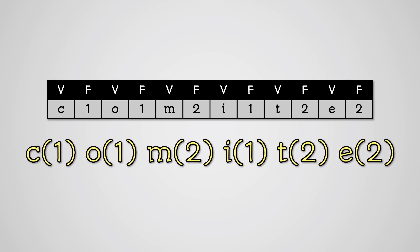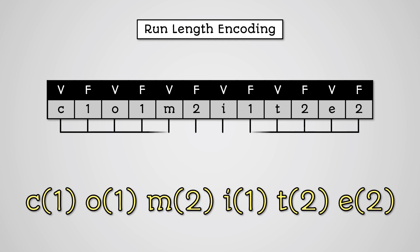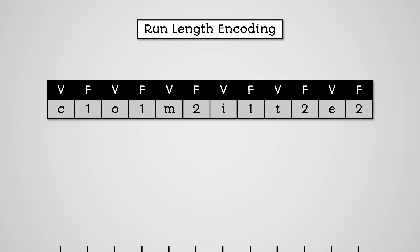This can also be expressed like this. This is a run length encoding and takes 12 pieces of frequency value data for the word committee. It is critical for a frequency value pair table to be in the order in which the characters appear in the word.